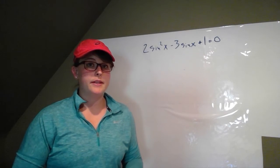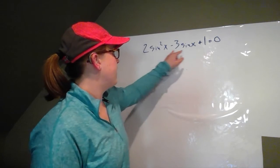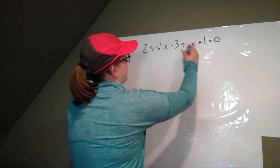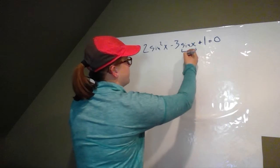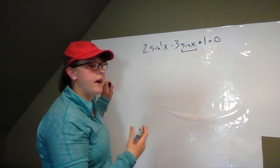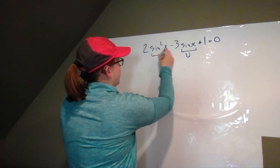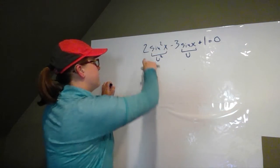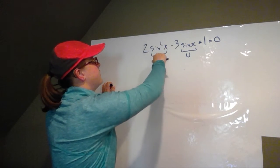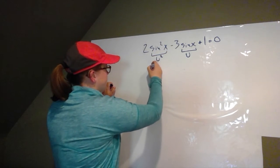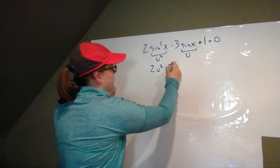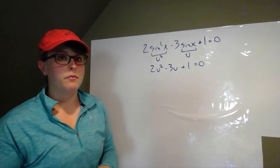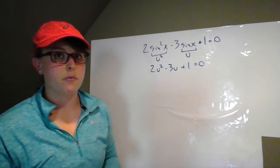If you remember from class what we did instead of using sine in the equation when we're factoring it, we substituted a different variable for sine to make it look a little bit more like something that we're used to factoring. So I'm going to make sine of x equal to u. So then sine squared of x would be u squared. So we get two u squared minus three u plus one equals zero. We'll put the sines back in when we get closer to the end and more ready to solve.